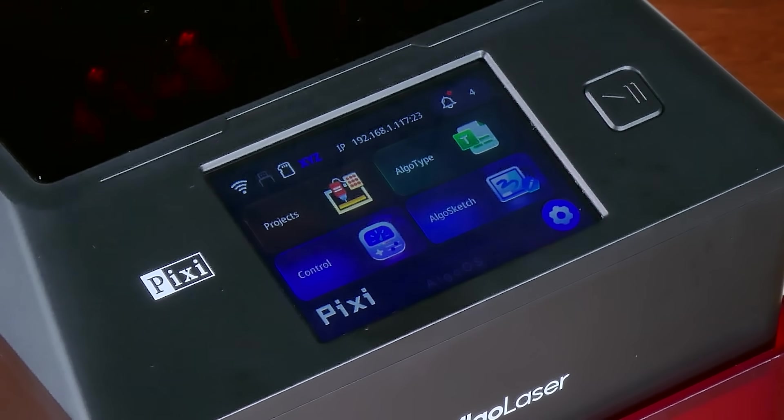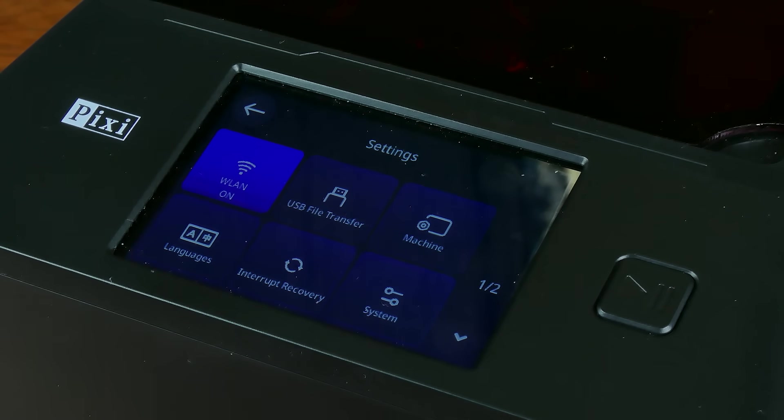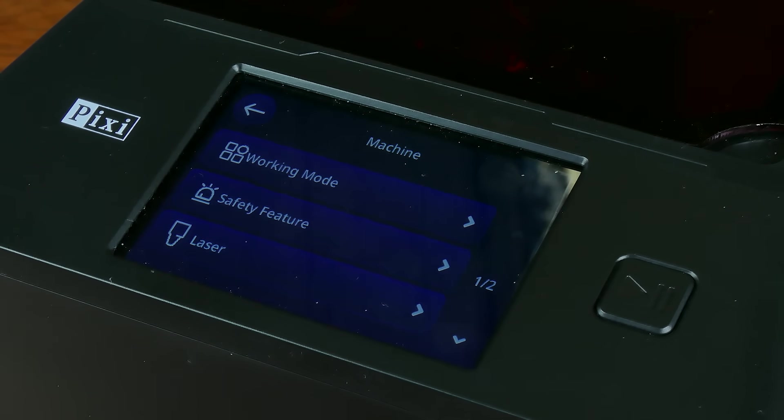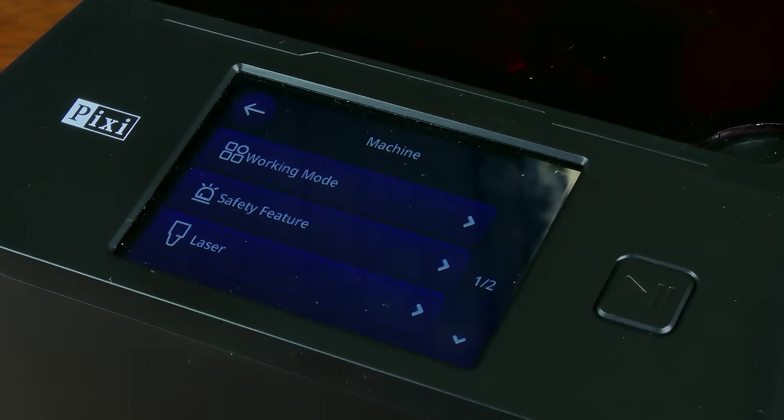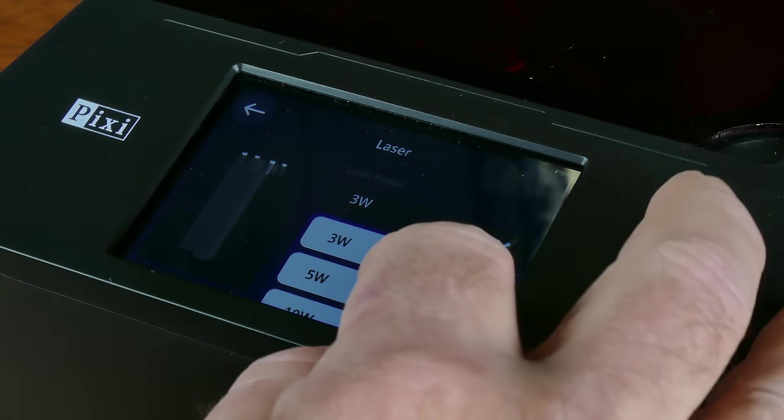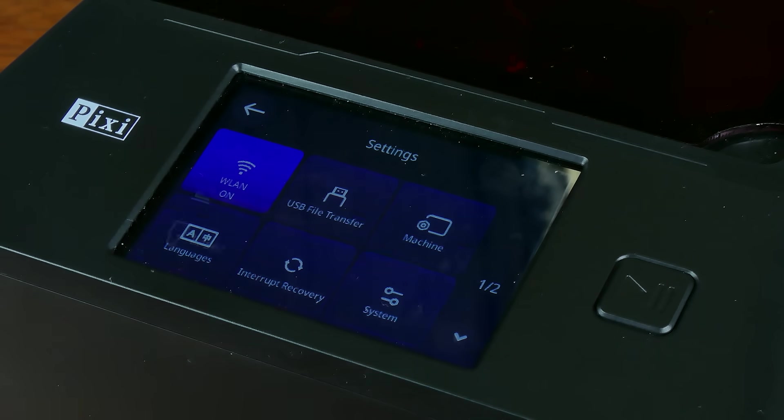Now we can have a bit of a play with the onboard features. Let's have a quick look at some of the settings there. Under machine you can add extra devices like a rotating chuck. One thing we need to do is tell the Pixie laser what type of laser head we have. We need to choose 10 watt because that's the one that Algo Laser sent me, and that is literally all the setup we need to do.